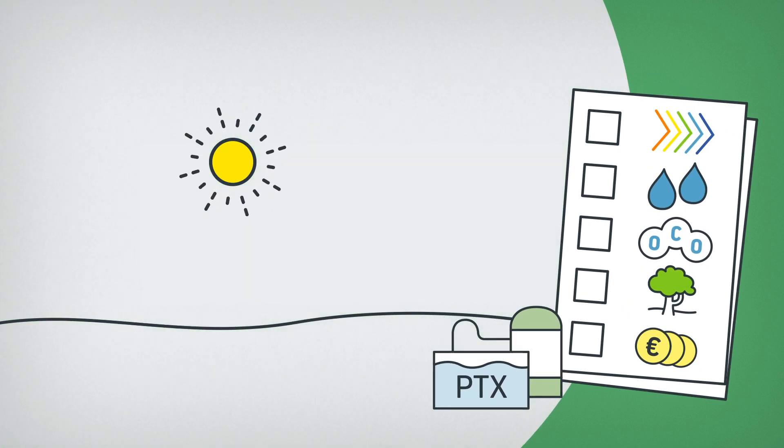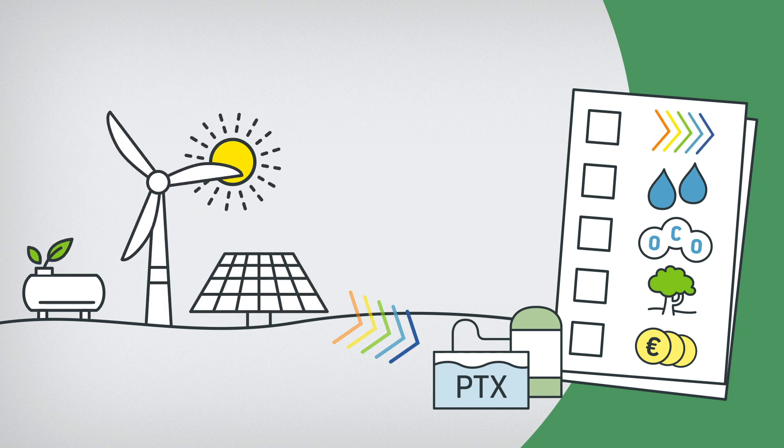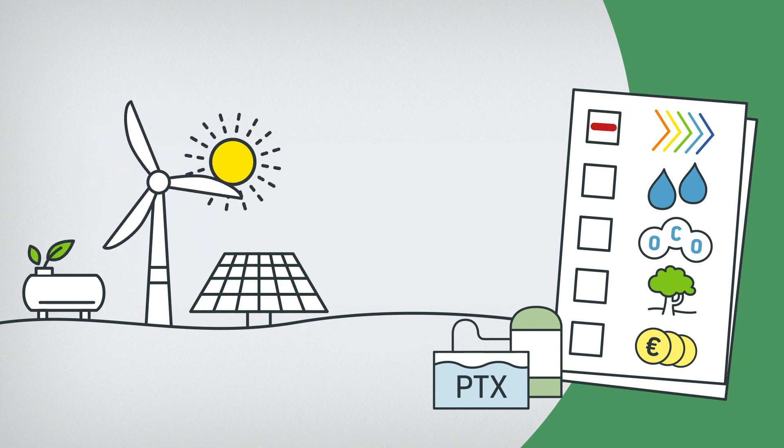To ensure that CO2 emissions are reduced, PTX has to be produced using energy from additional green power plants. If not, its carbon footprint would be even larger than fossil fuels like natural gas and diesel.